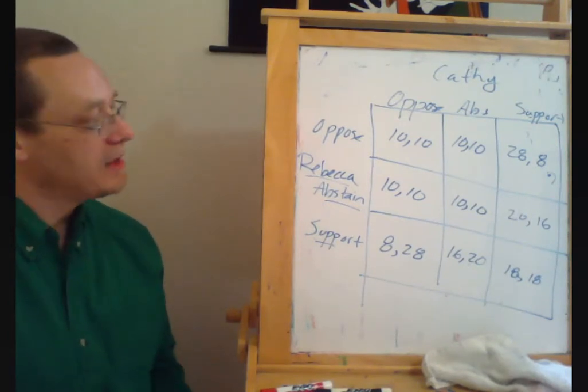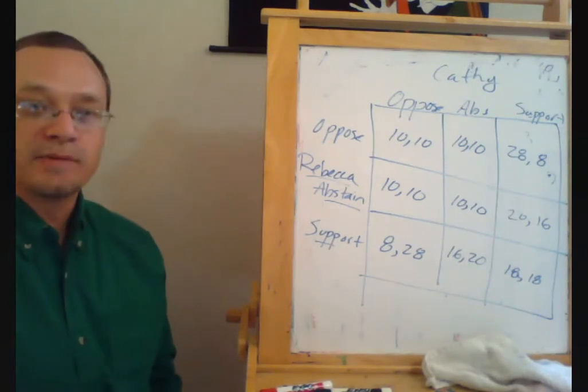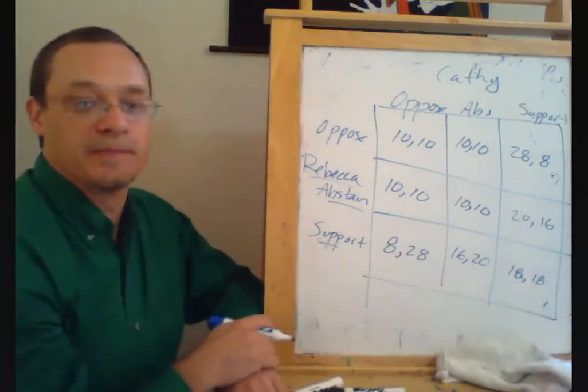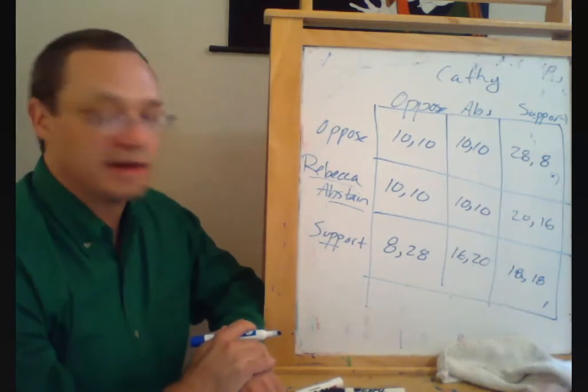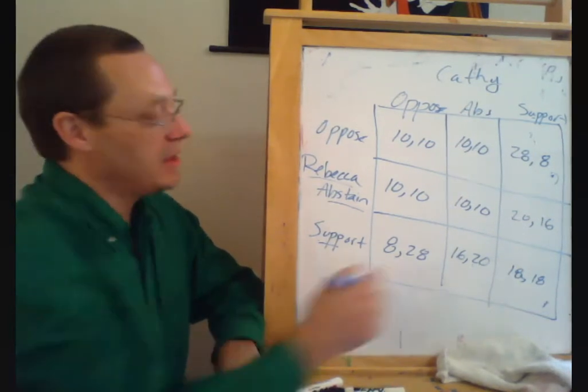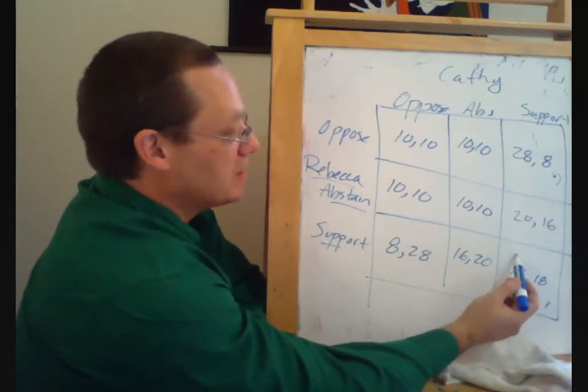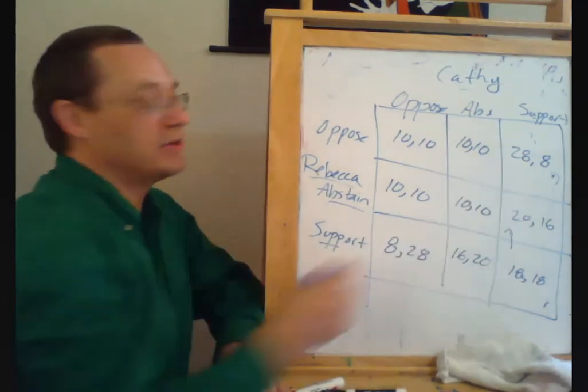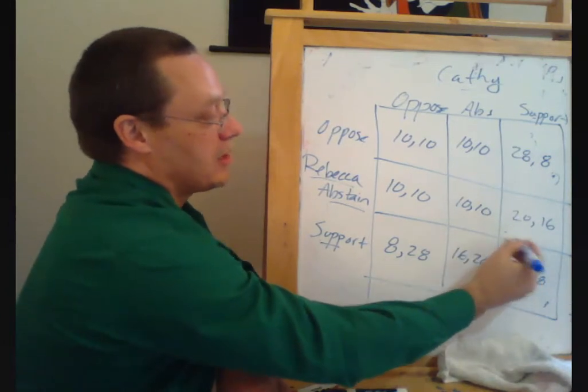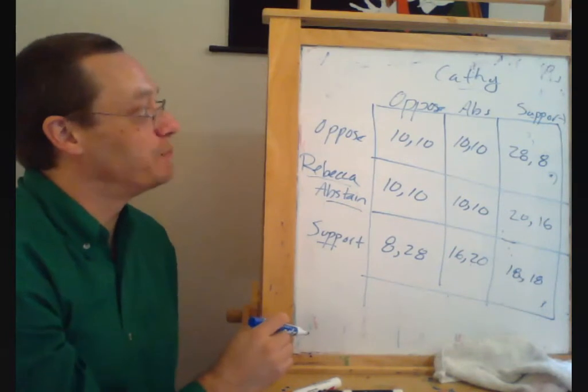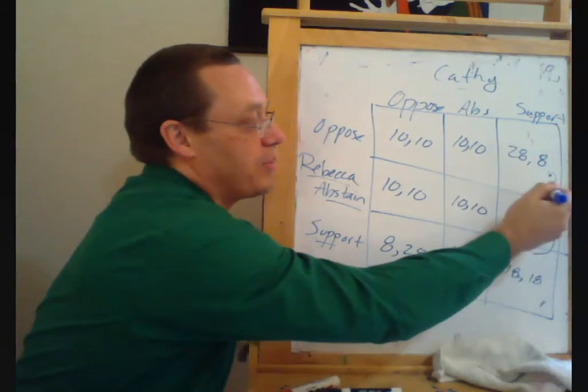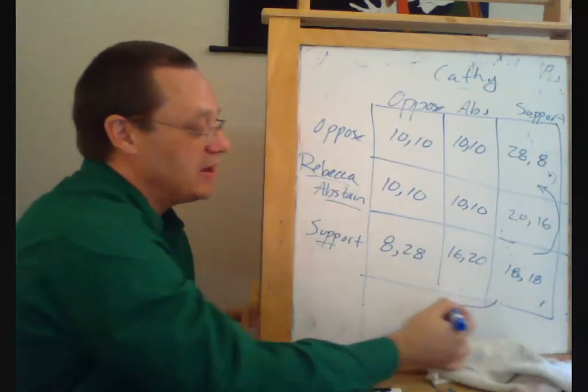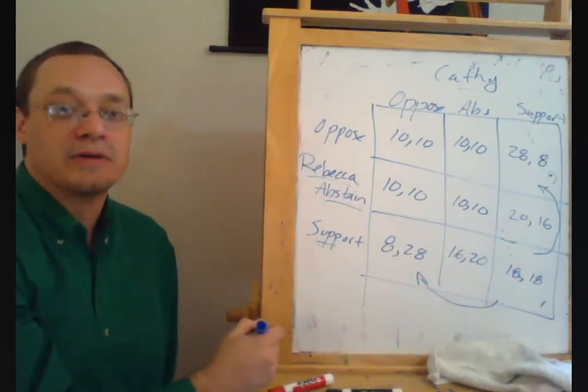So how is this game going to work out? Maybe the easiest way to do this is to think about what would happen if we started at various places in this game matrix. So let's suppose that initially, provisionally, we start in this lower right-hand corner. Does either player have an incentive to switch their strategy? Yes. So in particular, Rebecca, if Rebecca knows that Kathy is going to be supporting, then Rebecca is going to want to move up, potentially all the way up to oppose, in fact. So we can talk about what Rebecca's best response is. And Rebecca's best response, if Kathy is supporting it, is to go all the way up here. On the other hand, if Kathy knows that Rebecca is going to support, then Kathy should oppose. So that bottom right-hand corner is not an equilibrium.